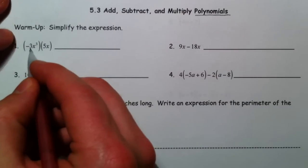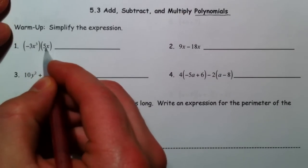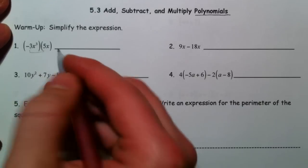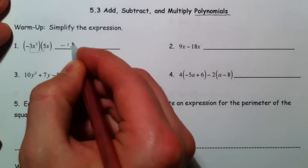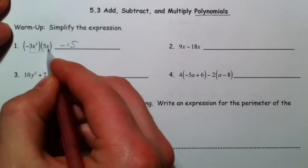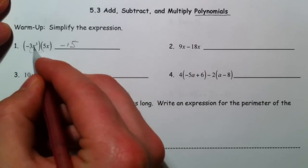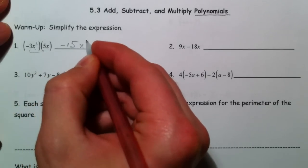So when we multiply negative 3x cubed times 5x, look at the negative 3 times 5 as negative 15, and x cubed times x, well there's 3 x's and 1 x, so that makes x to the 4th.